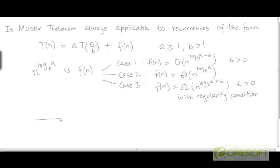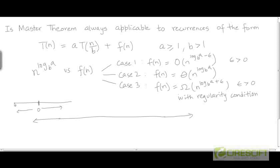What I would like to do here is conceptually imagine a number line extending in both directions — a number line of functions. Just as a regular number line represents real numbers with 0 as a central point, all numbers greater than 0 to the right and less than 0 to the left, we can imagine a number line of functions where n^(log_B(A)) is analogous to 0 — the central point.